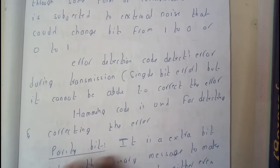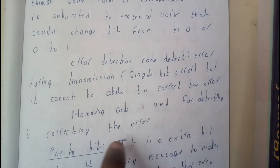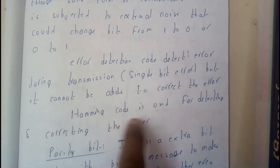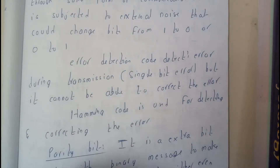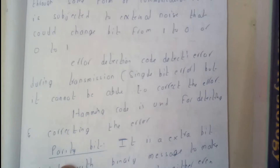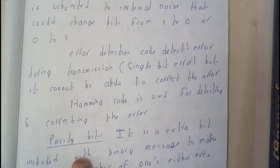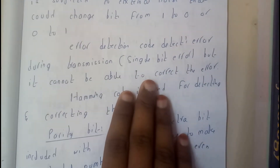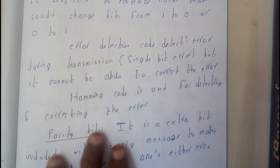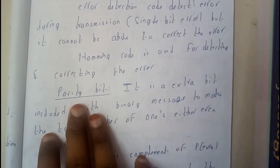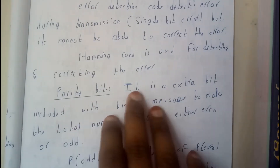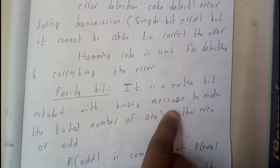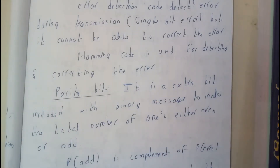There is a Hamming code, which is one of the most interesting codes, which can detect and also correct the error. Basically, to decrease these errors, they came up with an idea called parity bit.